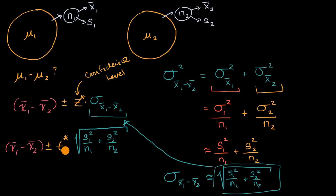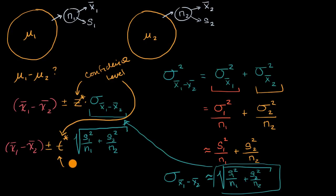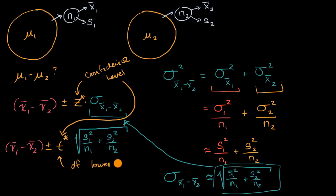You might ask: what determines our t star? You would look it up on a table using your confidence level and degrees of freedom. There's a simple answer and a complicated answer. There are sophisticated formulas that computers use to get more precise degrees of freedom. But what you'll typically see in a statistics class is a conservative view: take the lower of n one or n two and subtract one from that. So the degrees of freedom is the lower of n one minus one or n two minus one. In future videos, we will work through examples that do this.